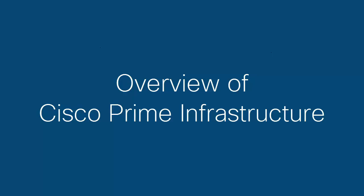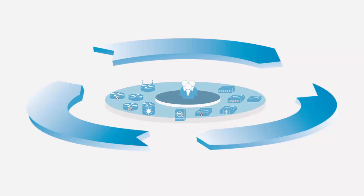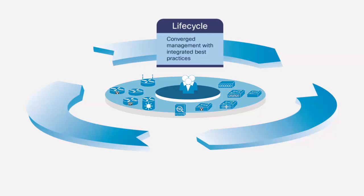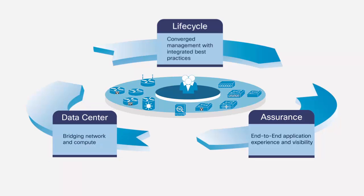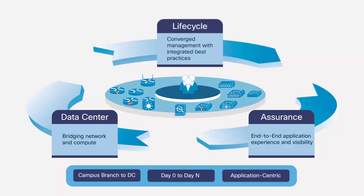This video provides you an overview of Cisco Prime Infrastructure. Cisco Prime Infrastructure is a single, integrated solution to comprehensively manage the lifecycle of wired and wireless access and campus and branch networks. It provides network administrators with a single solution for provisioning, monitoring, optimizing, and troubleshooting both wired and wireless devices.